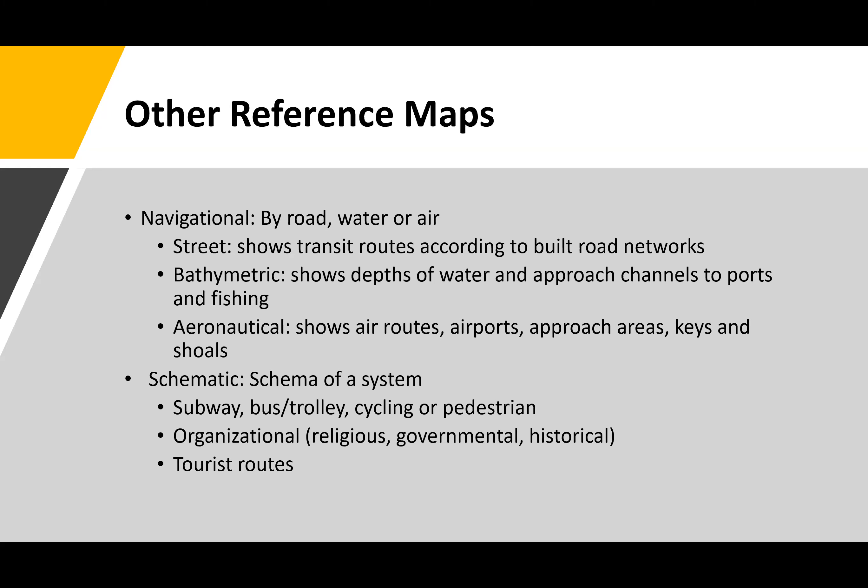Aeronautical navigation maps show air routes, airports, and approach areas. A few years ago when I flew to Nova Scotia, I watched the travel ticker on the plane — a map showing our progress with a curved line. You might ask why it was curved. Because we're on planet Earth — we're on a globe. The aeronautical map showing our route was based on the globe and not a flat map.